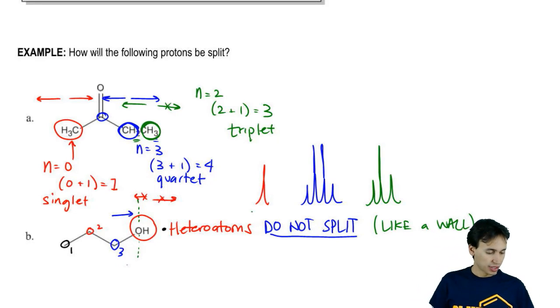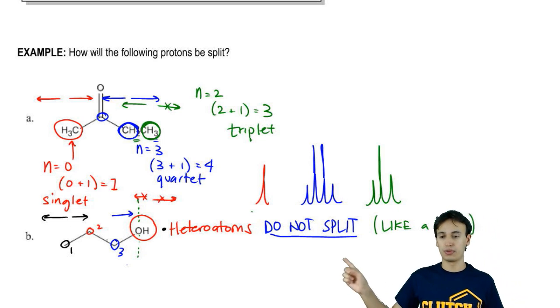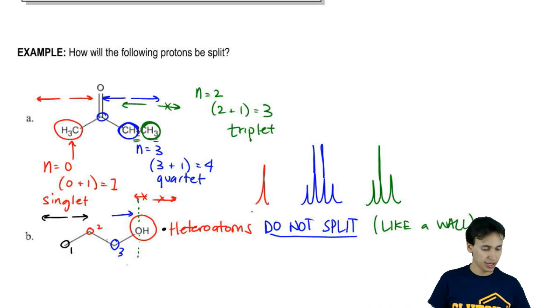Proton type 1: if I go to the left, nothing. If I go to the right, do I have any hydrogens? Yes, I do. I have two there. That has nothing to do with the number two—it just happened to be two hydrogens there.